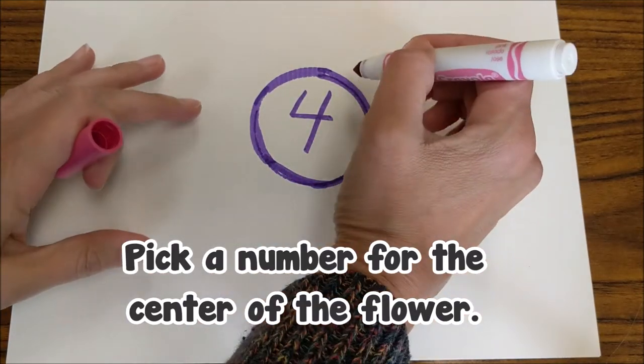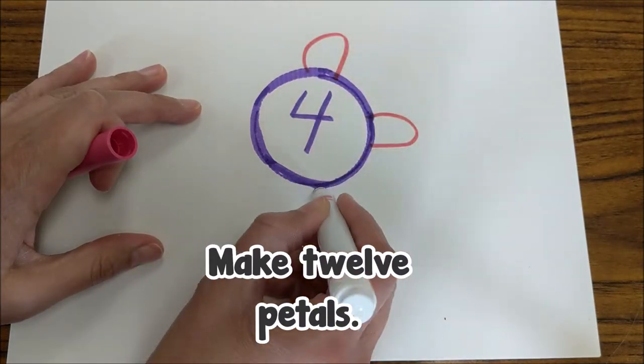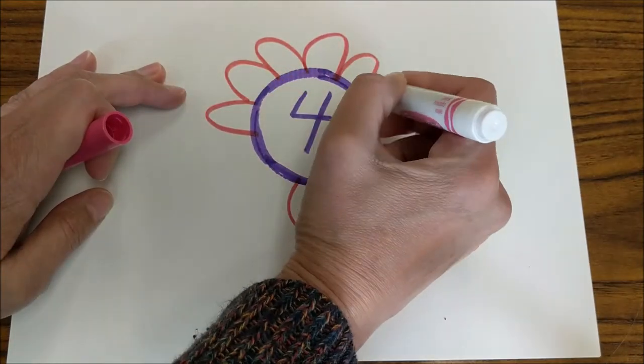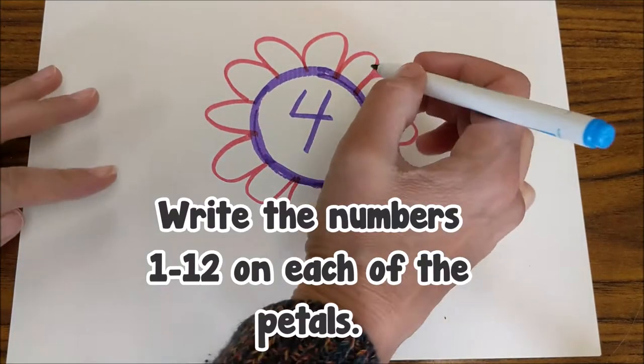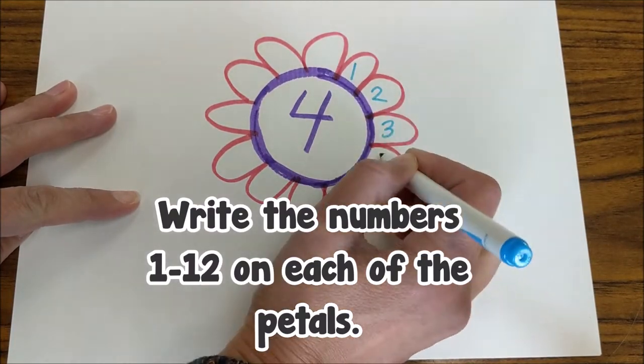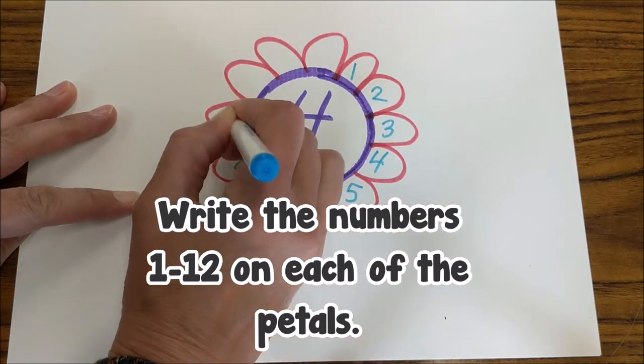After you've done that, you're going to create petals around the outside of the flower. You need 12 of them. And then in each one of these petals, we're going to write the numbers 1 through 12 because those are the multiplication facts we're practicing.